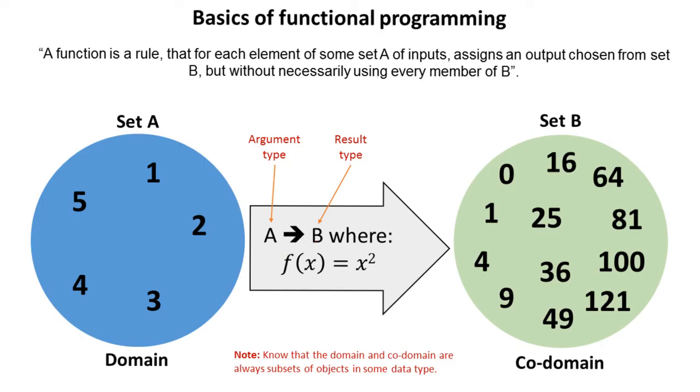Here for example, we have a function where x becomes x squared. We can see that each of the values in the domain from set A maps to one of the values from set B.